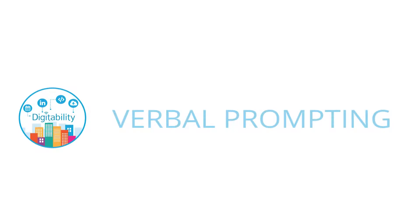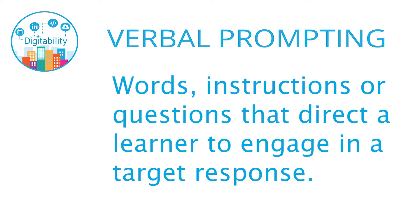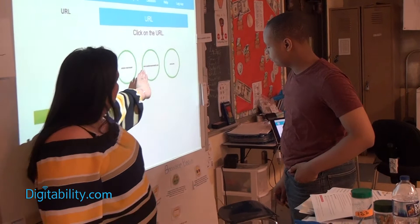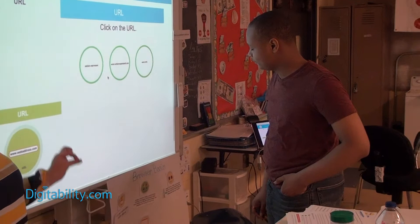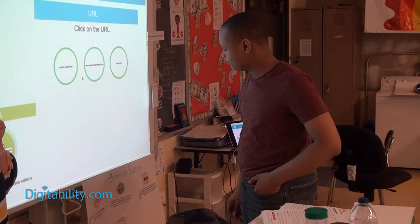Throughout Dawn's instruction, she uses verbal prompting — stressing certain words and phrases to elicit a correct response from students. She presents options: 'We have Autism Express, we have www.autismexpress.com, and then we have www.com. Which one of those do you think is the proper URL?' The student selects the correct answer and the class celebrates again.